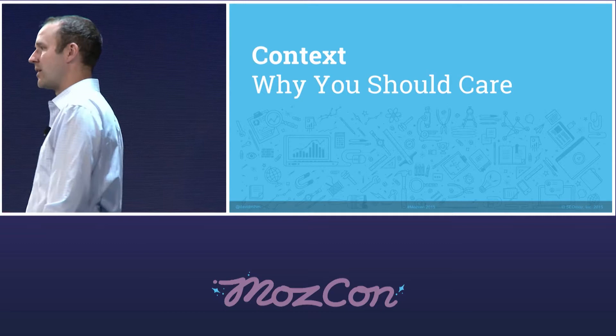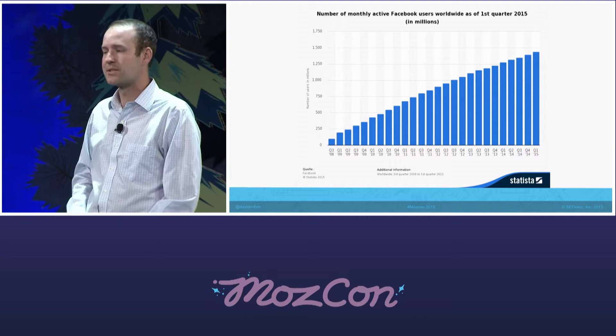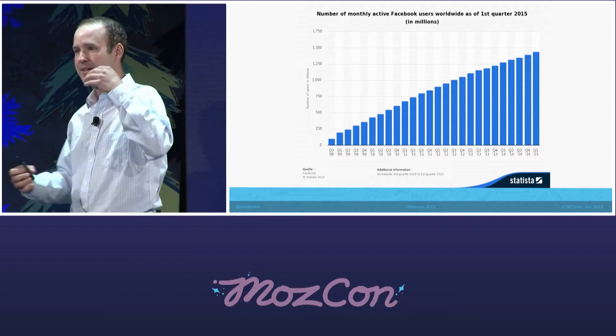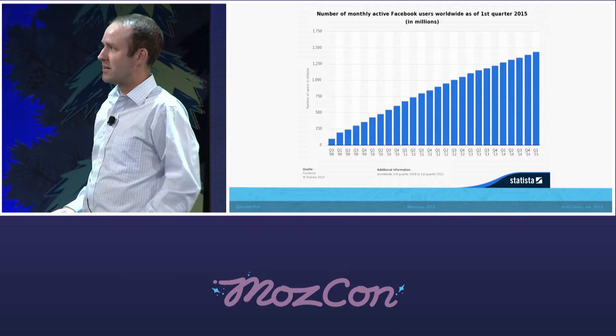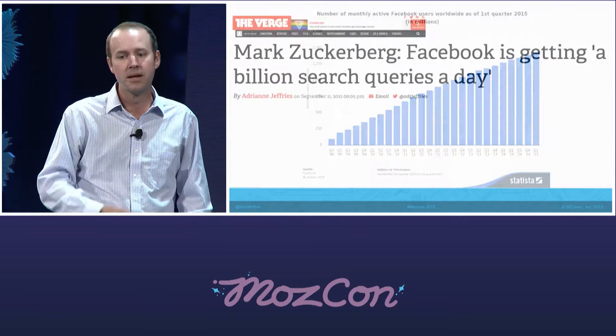A little bit about why I think you should care and why you should be paying attention to Facebook search. I'm sure all of you have seen some variation of this graphic — basically Facebook's user growth in the last seven years. The main point is that, despite what we hear about Instagram, WhatsApp, Snapchat, and all of these things bleeding Facebook users, they're still growing at a pretty good clip. The percentage growth rate has obviously slowed down, but it's a linear growth pattern and they have almost 1.5 billion users on Facebook today.